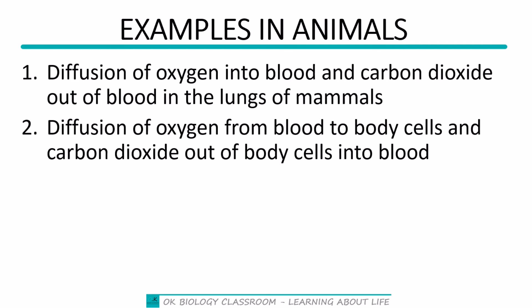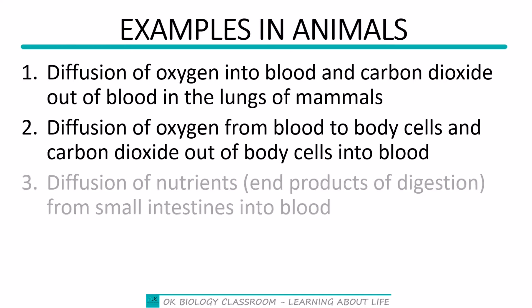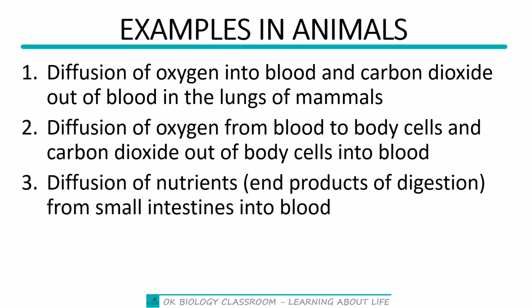As oxygen moves into body cells, carbon dioxide is also diffused out of the body cells back into the blood. Third, diffusion of nutrients — the end products of digestion from the small intestines into blood. After digestion, amino acids, glucose, fatty acids and glycerol are moved from the small intestines into the blood by diffusion.